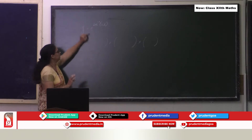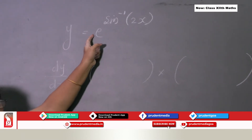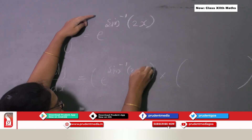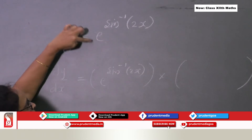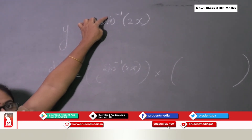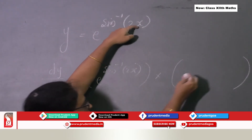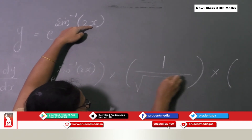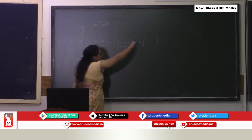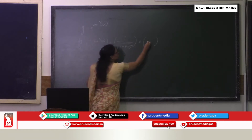For the first part — the derivative of exponential form — the derivative is always the same function. So e raised to sin inverse of 2x goes into the first bracket. Next in sequence is the inverse trigonometric function sin inverse. The derivative of sin inverse is 1 upon root(1 − x²), but here we use sin inverse of 2x, so it becomes 1 upon root(1 − (2x)²). Then I multiply by the derivative of 2x, which is 2.